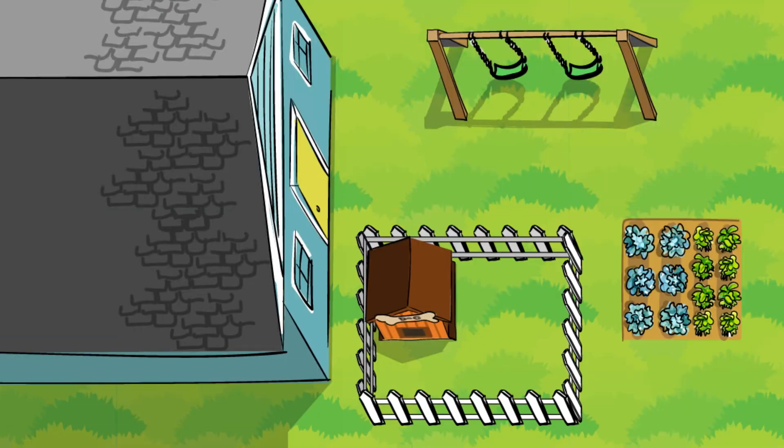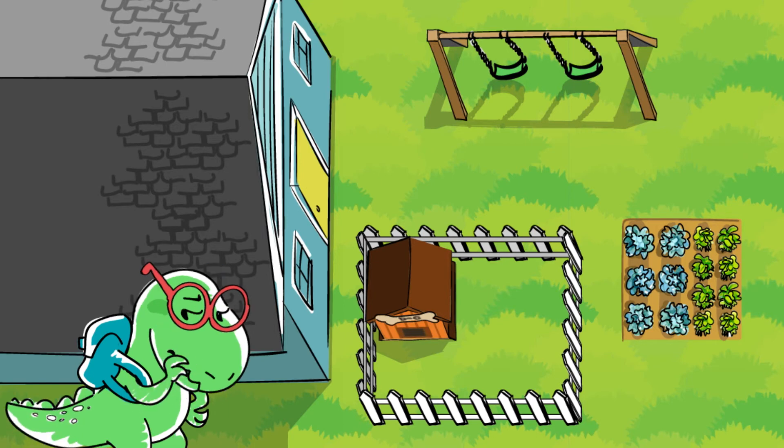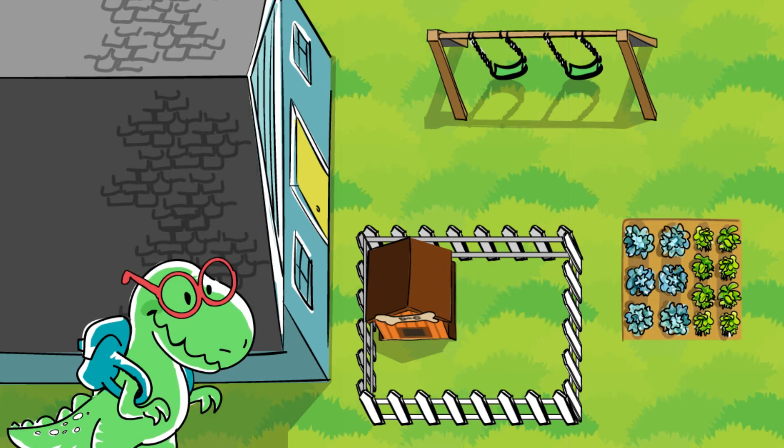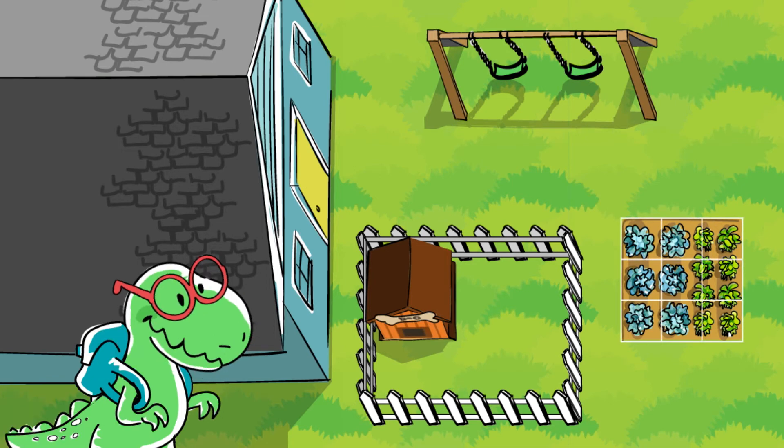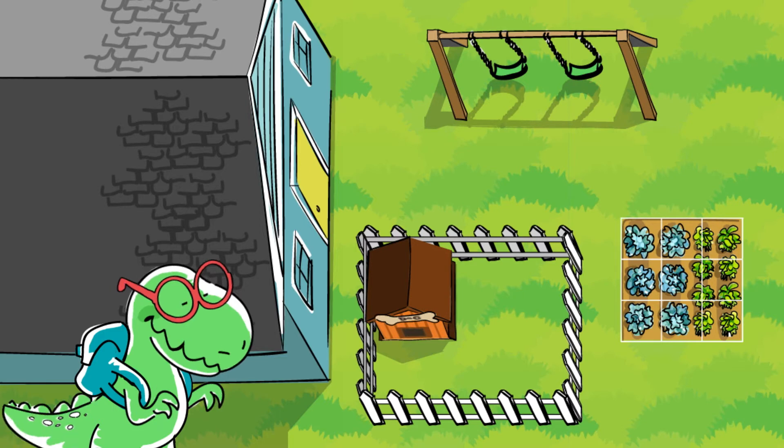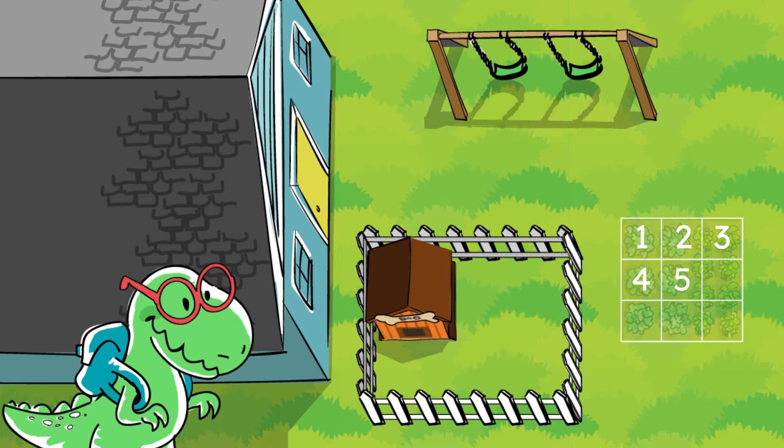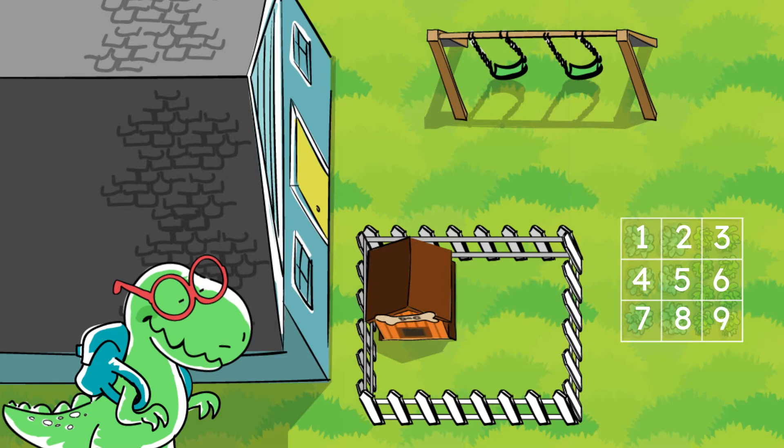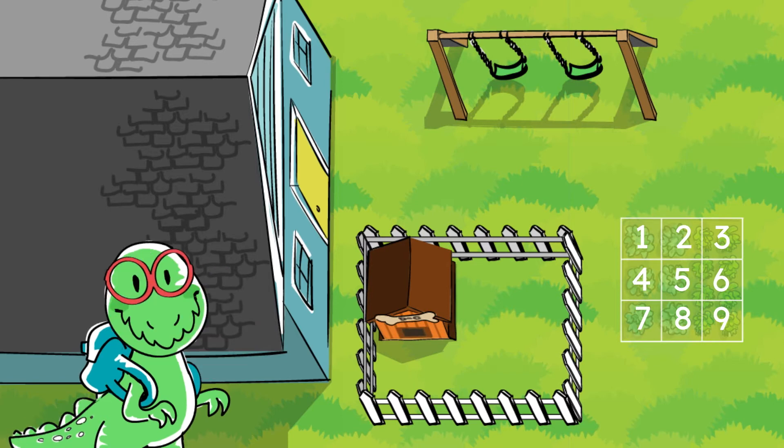Great! Can you use one of our methods from before to determine the area of my garden? Whisper to tell me how you count it. Oh, that's an awesome strategy. You covered the garden with unit squares. Let's count them together. 1, 2, 3, 4, 5, 6, 7, 8, 9. That's right. My garden has an area measurement of 9 square units.